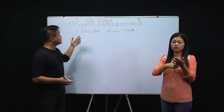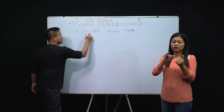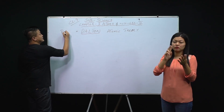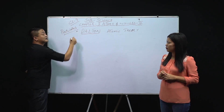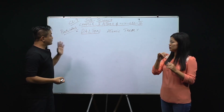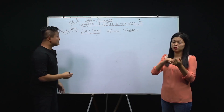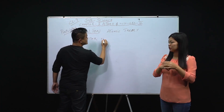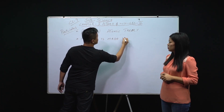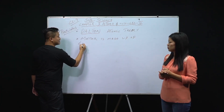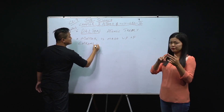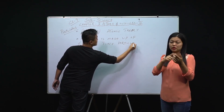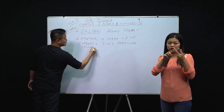After that we have Dalton's Atomic Theory, given by Dalton himself. There are six postulates, and all of them are important. The first postulate of Dalton's Atomic Theory is that matter is made up of extremely tiny particles called atoms.